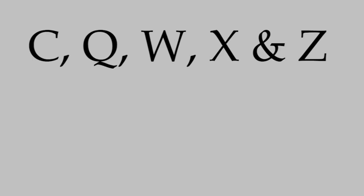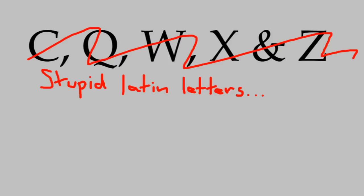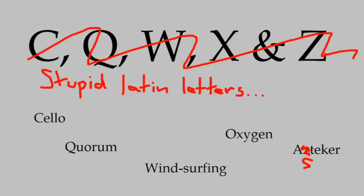Finally, C, Q, W, X, and Z. These basically don't occur in the Danish language, except in foreign words. Again, Z is pronounced like a double S, always.